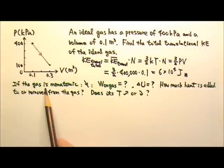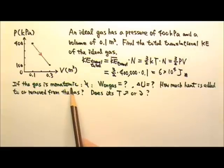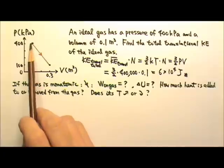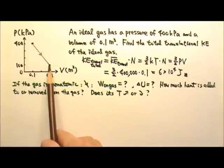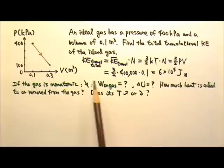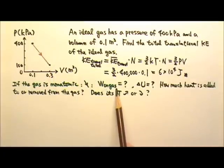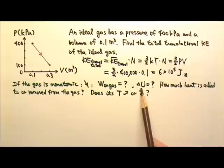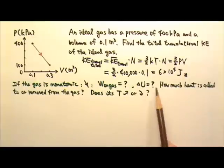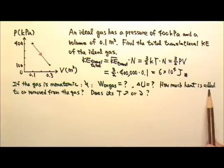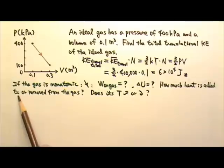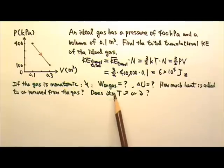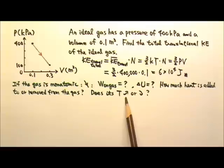If this ideal gas is monatomic and it goes through this process, what is the work done on the gas? What is the change in internal energy of the gas? How much heat is added to or removed from the gas? Does the gas's temperature go up or down?